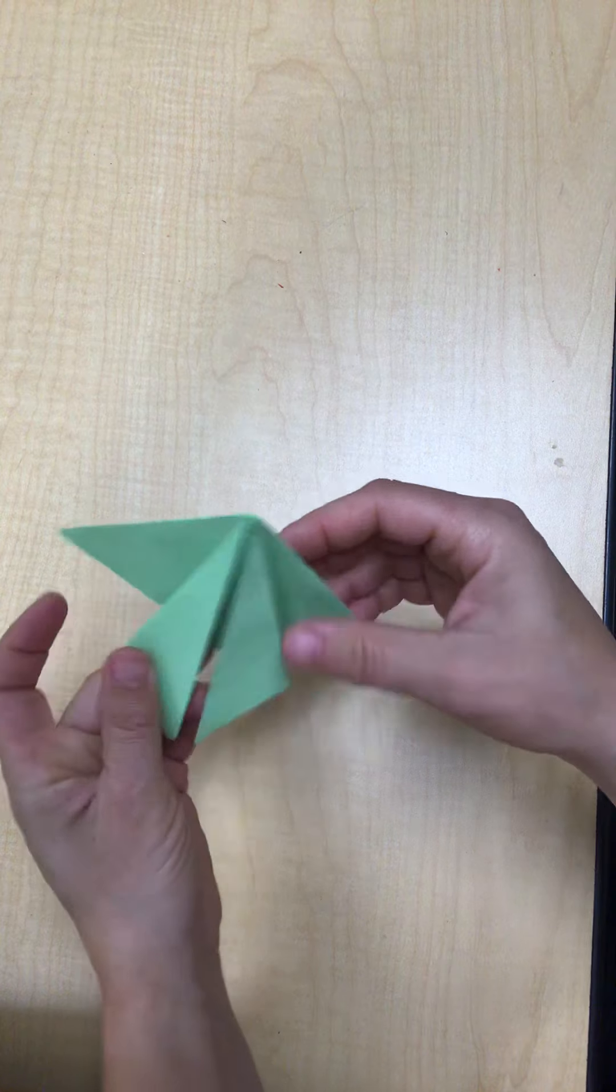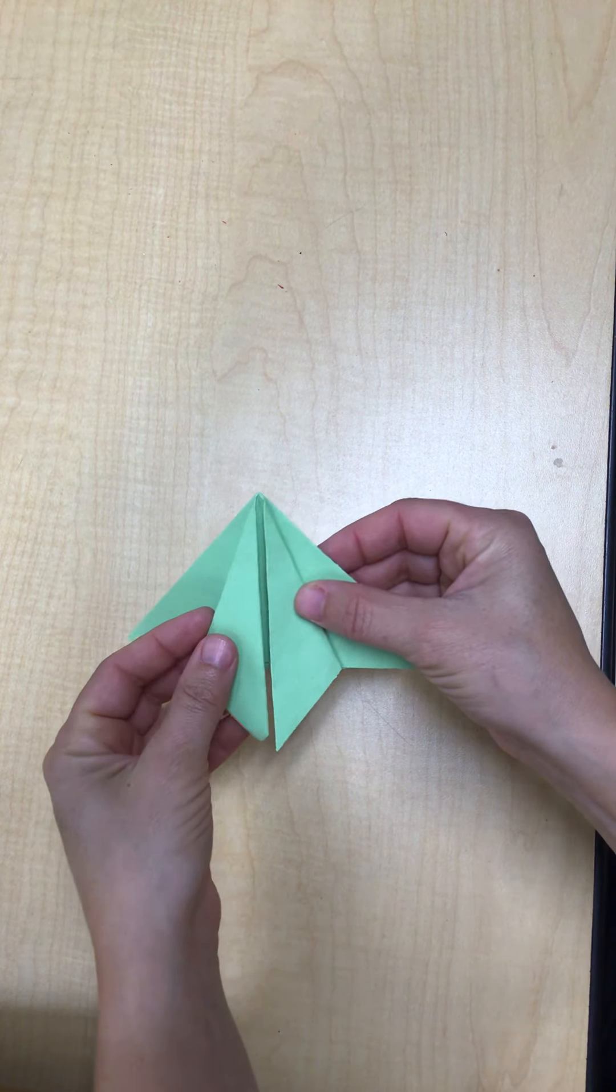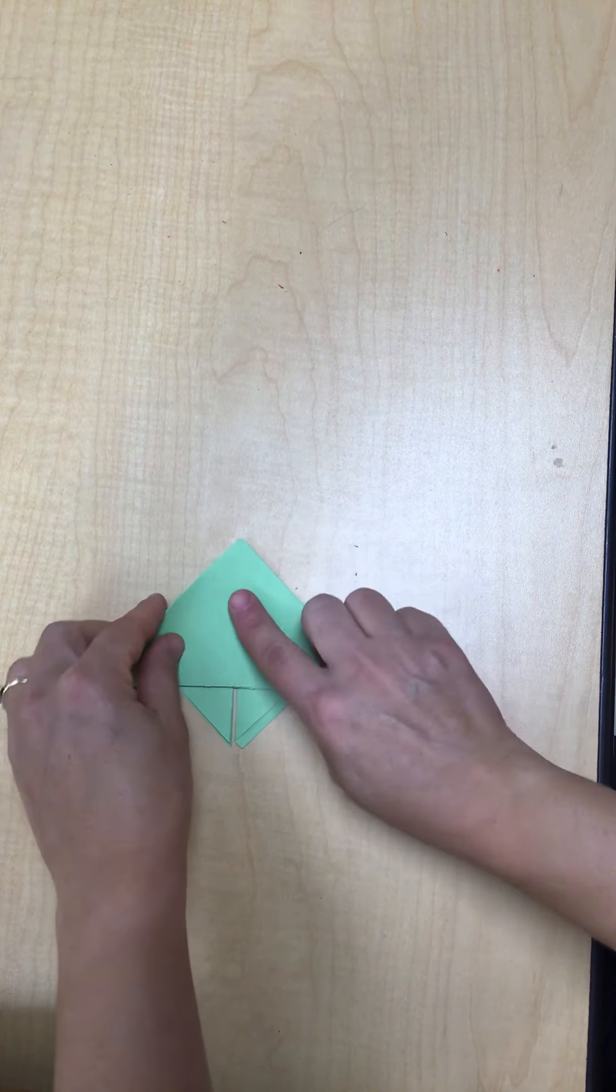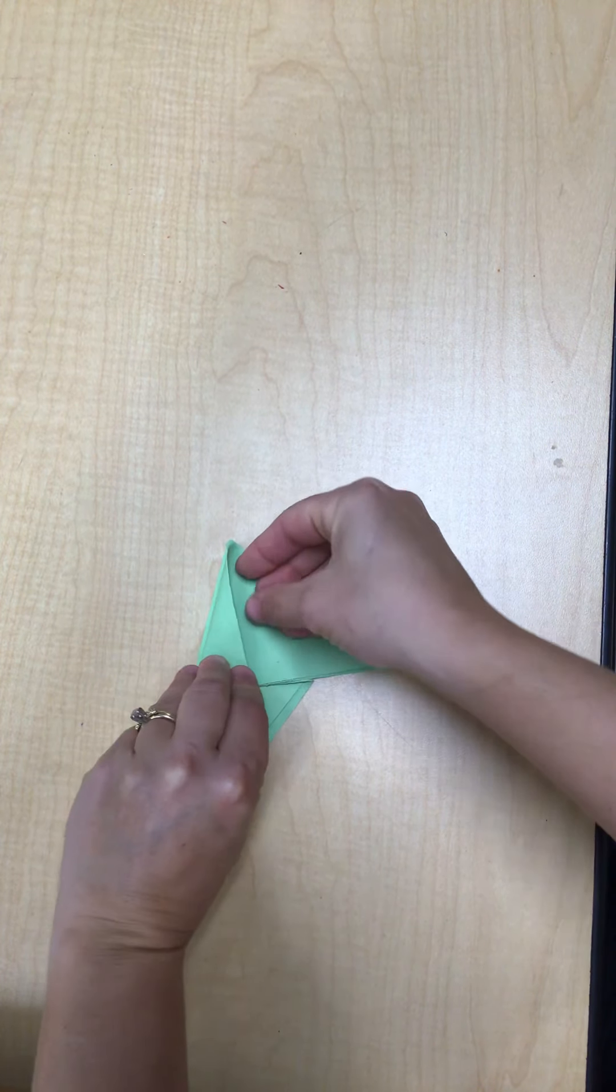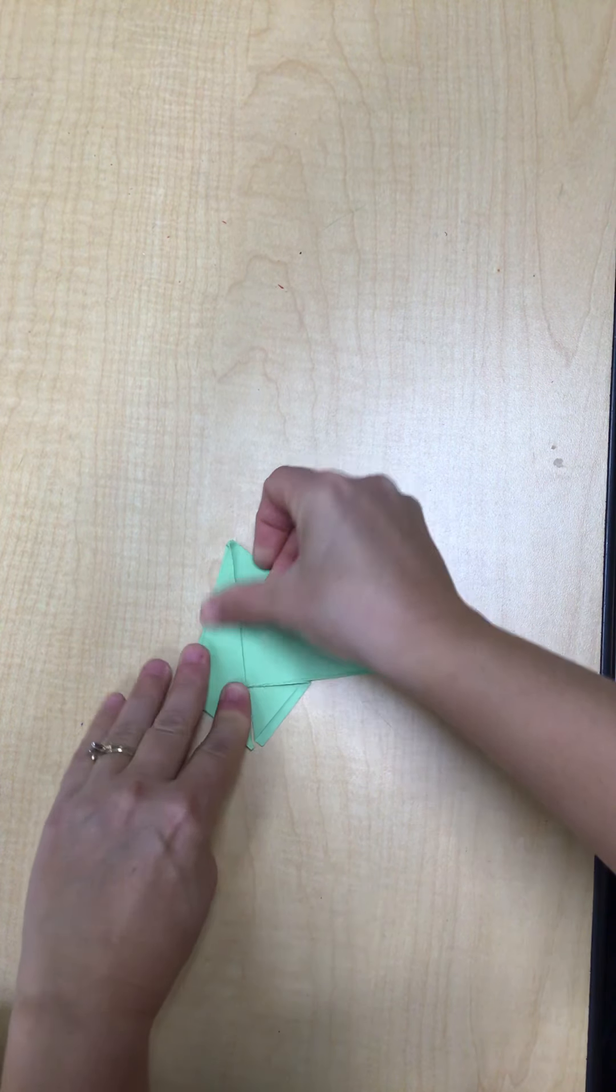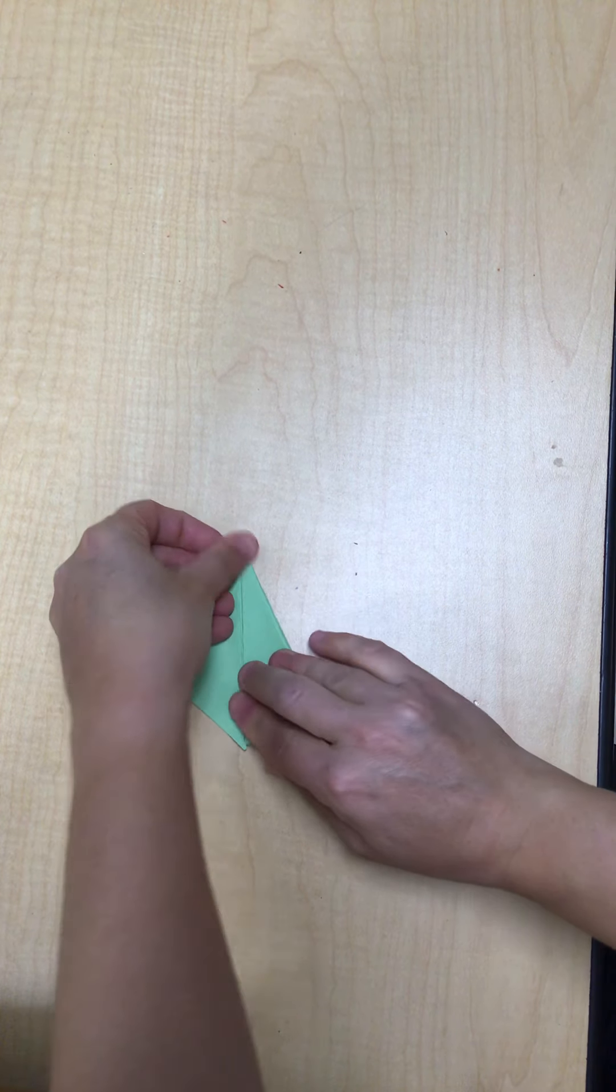Now you have a back triangle. For this next fold, flip it over and pretend there's a line down this center. You're doing the same thing that you did on the front, but on the back.